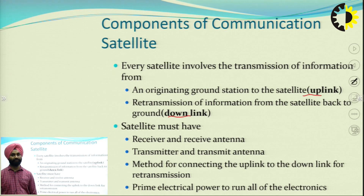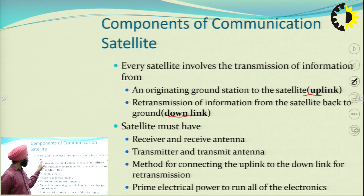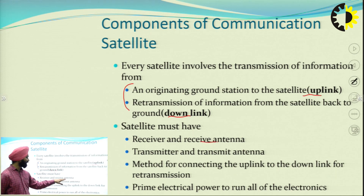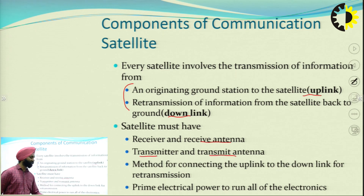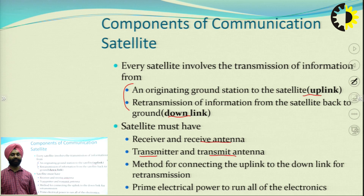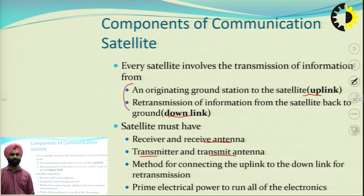For all uplink and downlink communications, the satellite must receive and transmit signals, so it needs antennas. It needs a receiving antenna as well as a receiver to receive the signal. Similarly, it must have a transmitter and transmitting antenna — the transmitting antenna may contain aperture antennas, array antennas, or wire antennas. The transmitter also contains blocks for the transmission of signals.